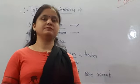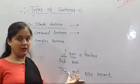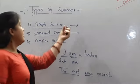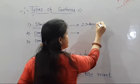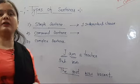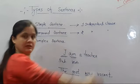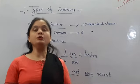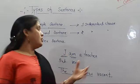So we have seen what a simple sentence is and its types. Now let's take up the compound sentence. Have a look at the compound sentence. In a simple sentence there is one independent clause, but in a compound sentence there are two independent clauses. That is the difference.